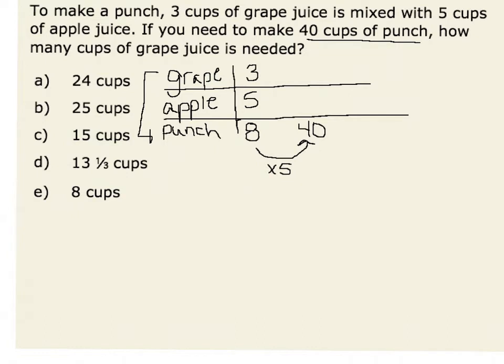In order to keep an equivalent ratio, whether it's part-part or part-whole, I would have to multiply each of my parts by five. Therefore, if I took my amount grape and multiplied it by five, I would have 15 total cups of grape juice.